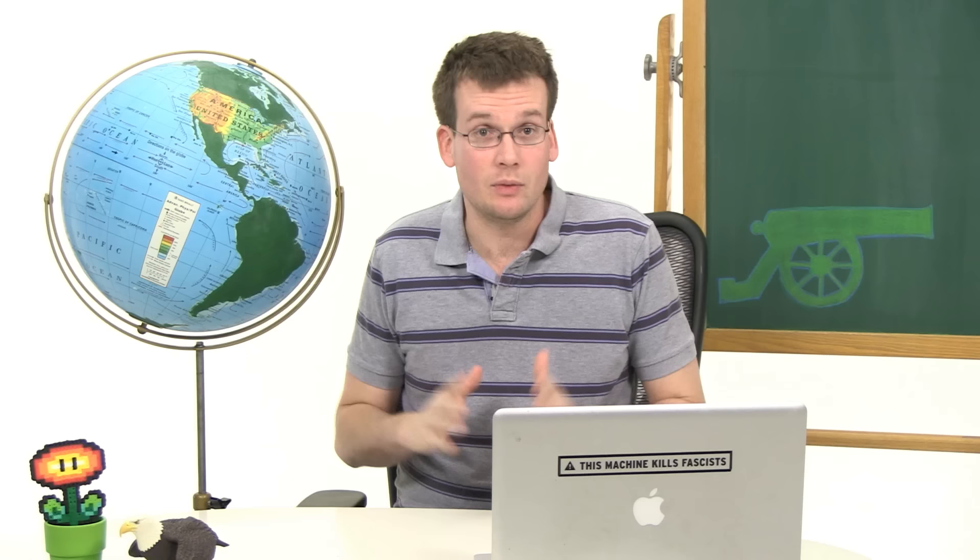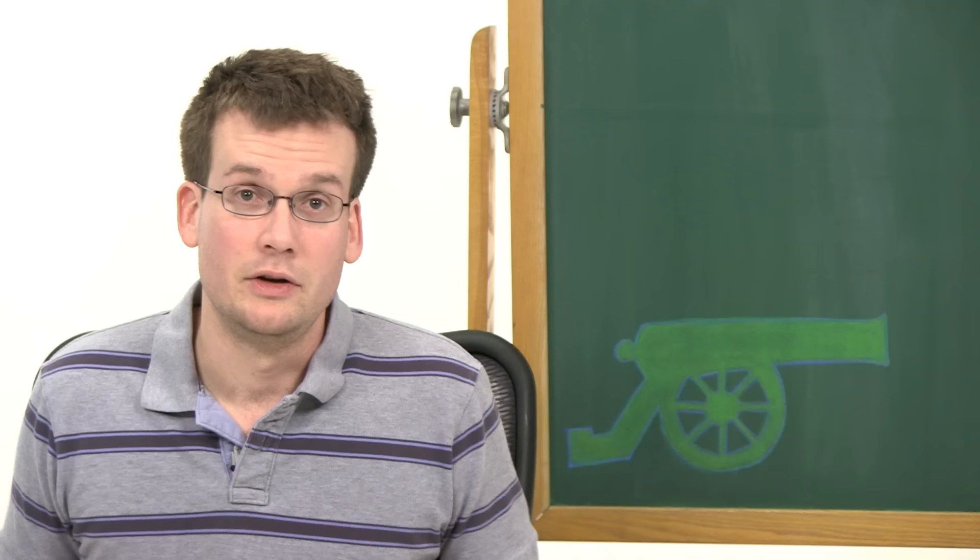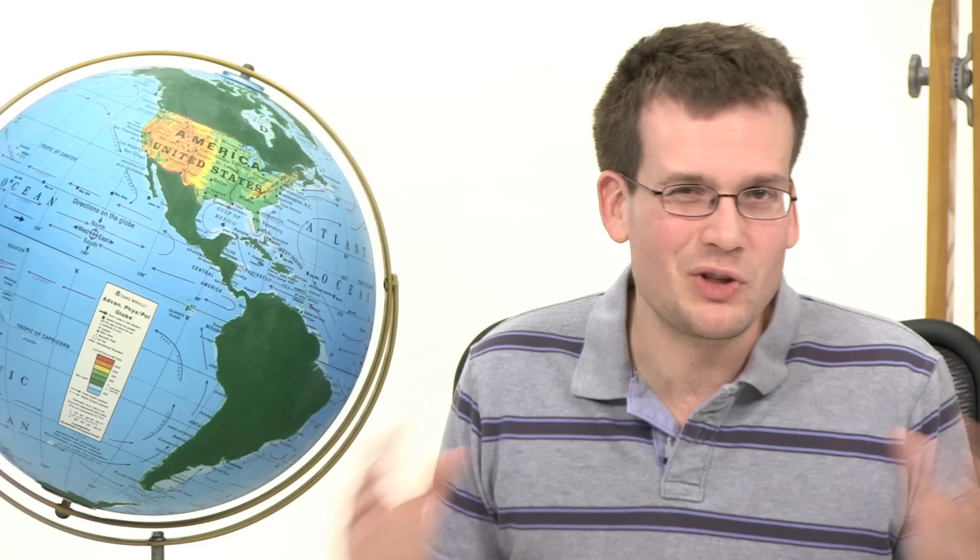So the War of 1812 was the first time that the United States declared war on anybody. It was also the smallest margin of a declaration of war vote, 79 to 49 in the House, and 19 to 13 in the Senate. Northern states, which relied on trade a lot, didn't want to go to war, while Southern and Western states, which were more agrarian and wanted expansion to get land for farming and slavery, did.